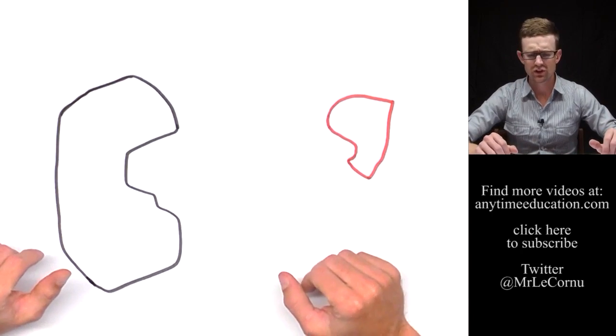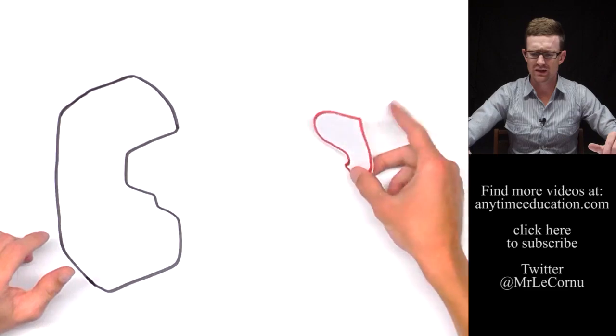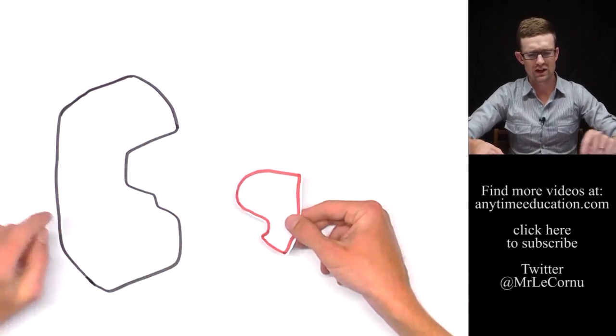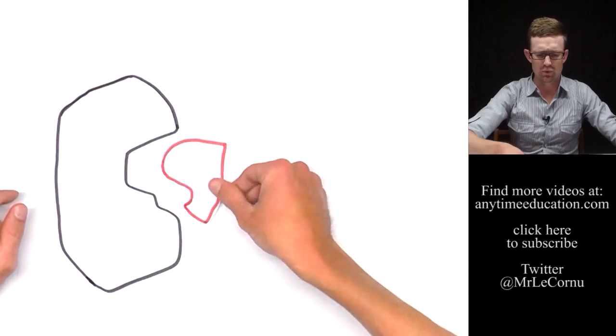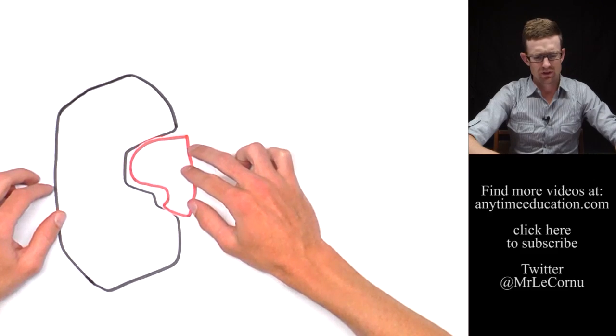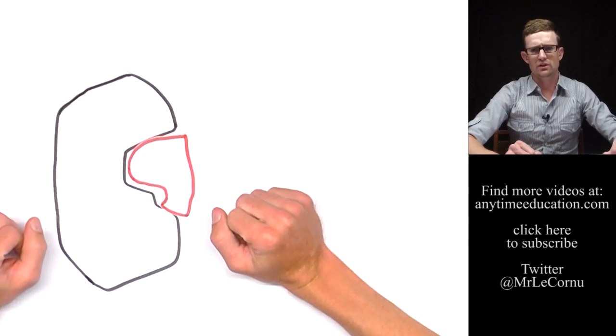What you'll notice is that when a substrate is specific for an enzyme, they have what we call complementary shapes. This substrate will fit into what we call the active site of this enzyme. Now that's an approximate complementary shape.